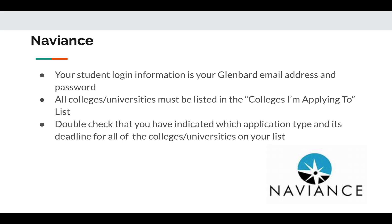All of the colleges and universities that you are applying to must be listed in the Colleges I'm Applying To list. This feature can be found under the Colleges tab at the top of the Naviance homepage. Be sure that your college list is accurate in Naviance, as counselors cannot send materials unless all of your colleges are in your list.